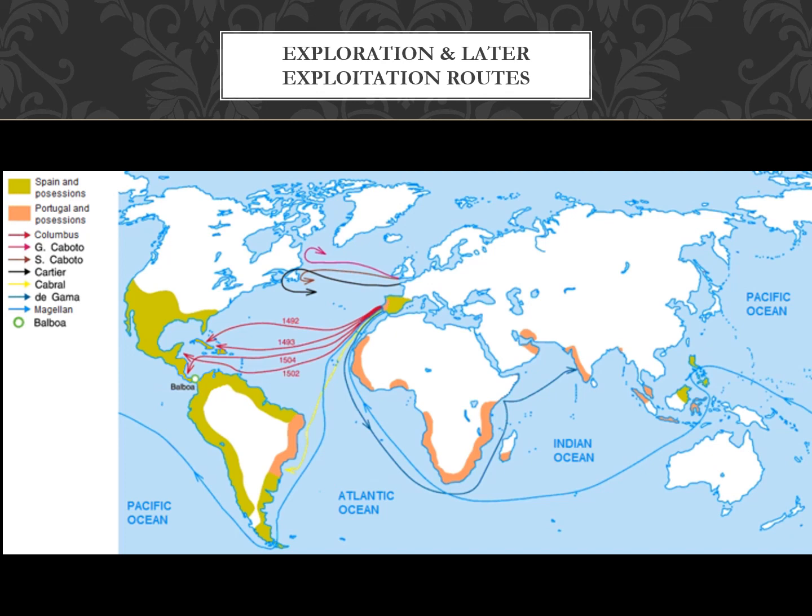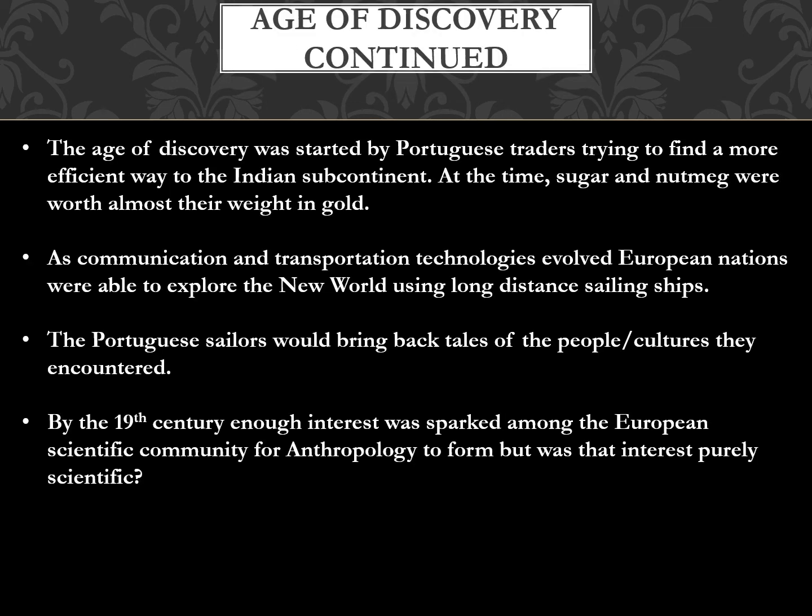These were famous exploration routes — you can see Columbus's route in 1492 in the purple coloring. These were later called routes of exploitation because in setting up initial colonies, European powers generally didn't treat the native indigenous people with much respect. It ended up being a grab for resources where European powers in some cases enslaved the native people to work on their plantations.